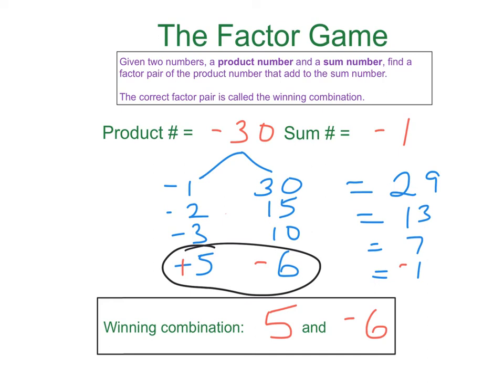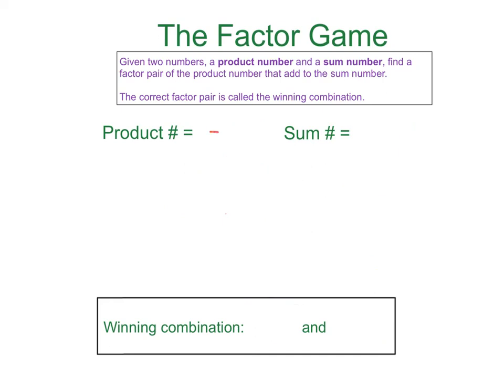Next example. Okay, negative 24 for the product number and negative 10 for the sum number. Looking at factor pairs of 24, again I'm going to go through my list. 1 and 24, 2, 12, 3, 8, 4, 6. Now it's interesting about this one. If we aren't careful, we might fall in a trap of recognizing, hey, there's the 4 and the 6. They add up to 10. All I need to do is negate each one of them, negative 4 and negative 6, and we have the winning combination. Actually, that's not true.